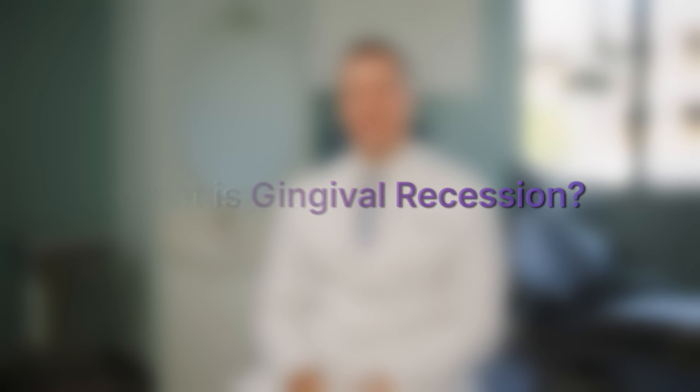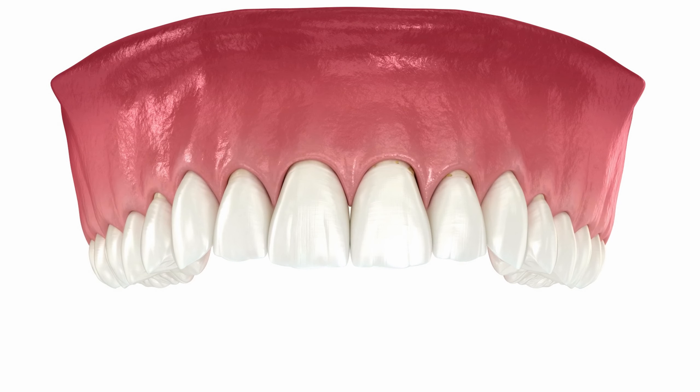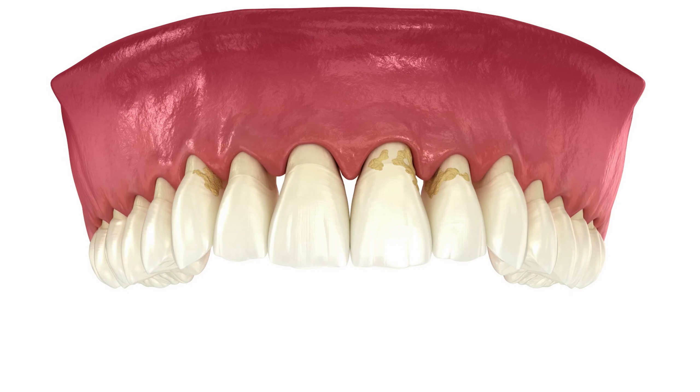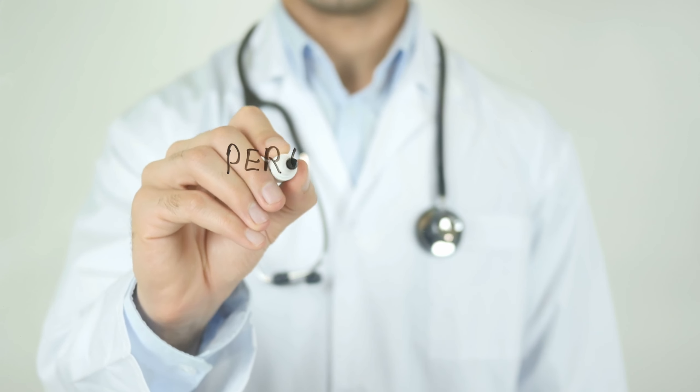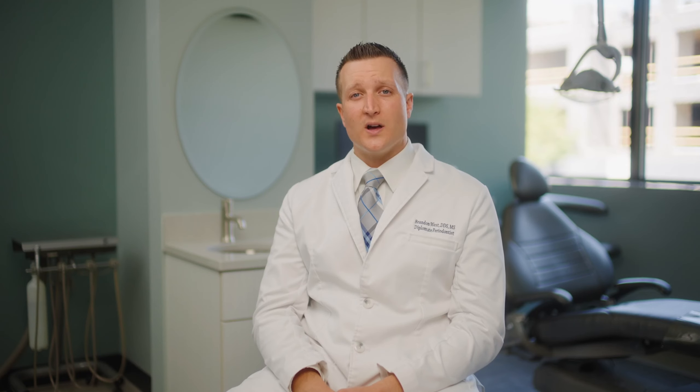What is gingival recession and how does it occur? Gingival recession is when your gums slowly disappear around the tooth due to chronic inflammation. The causes of gingival recession are typically heavy tooth brushing, previous orthodontic treatment, thin tissue that you are born with, or patients that have a past history of periodontal disease and chronic bone loss around those teeth.